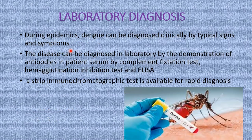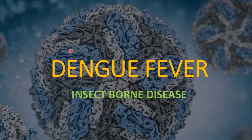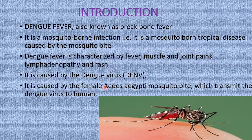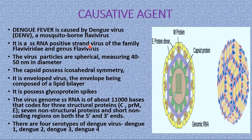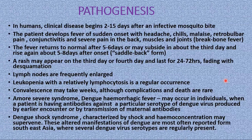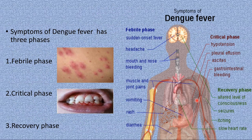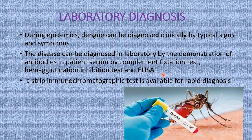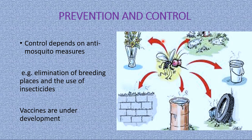In summary, dengue fever is caused by the dengue virus. We have discussed the causative agent and its structure, the epidemiology of how it is transmitted from one person to another, the pathogenesis of what happens when the virus enters the body, the symptoms across the febrile phase, critical phase, and recovery phase, the laboratory diagnosis, and prevention and control measures. That's all about dengue fever. Thank you.